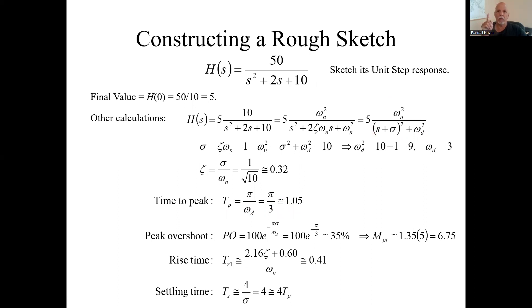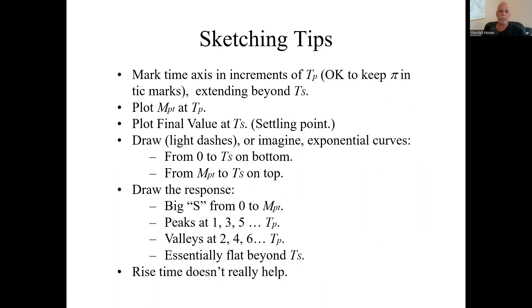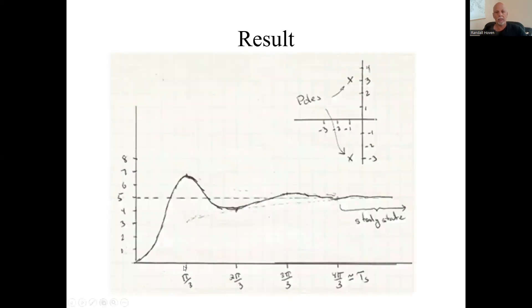Okay, we have the time to peak. And what do we do with that? Remember, it was pi over 3. That tells us how to lay out our x-axis, our time axis. We mark it in increments of that t to peak. So if it's pi over 3, then we want increments of that: 2 pi over 3, 3 pi over 3, et cetera. That's how we do the increments along the bottom axis.